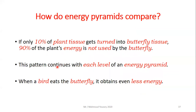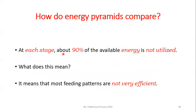If only 10 percent of plant tissue gets turned into butterfly tissue, the other 90 percent of the plant's energy is not used by the butterfly. This pattern continues at each level of the energy pyramid — when a bird eats a butterfly, it obtains even less energy. At each stage, about 90 percent of the available energy is not utilized, meaning most feeding relationships are not very efficient.